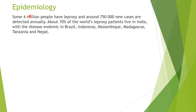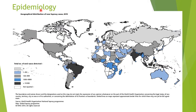Talking about epidemiology, some 4 million people have leprosy and around 750,000 new cases are detected annually. About 70% of the world's leprosy patients live in India, with the disease also endemic in Brazil, Indonesia, Mozambique, Madagascar, Tanzania, and Nepal. According to WHO, these are the regions where leprosy is present in quite significant numbers, with black areas indicating where new cases are most concentrated.